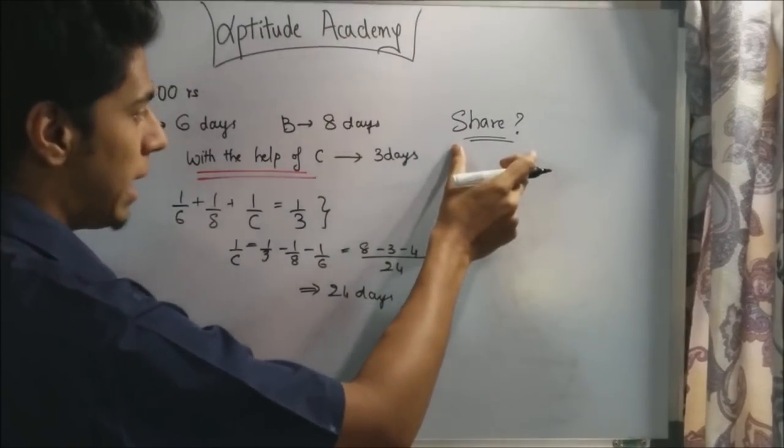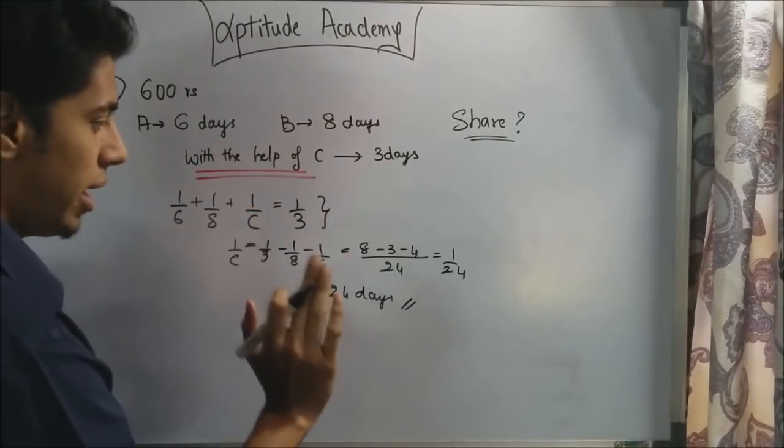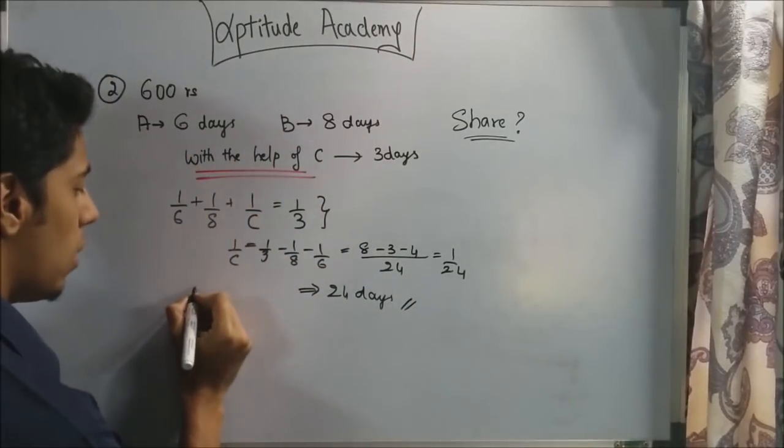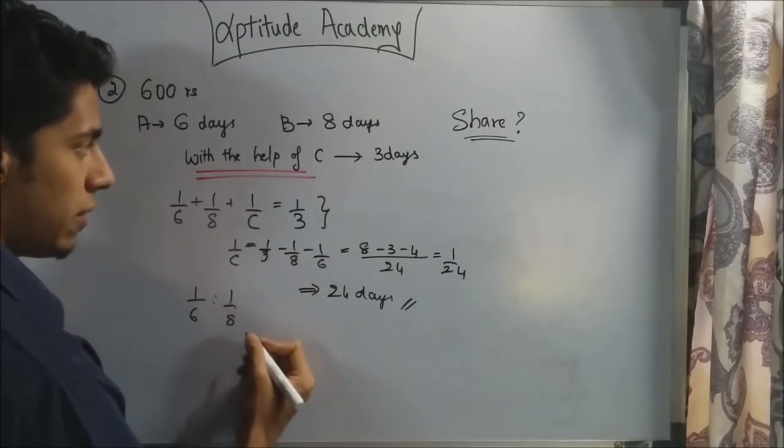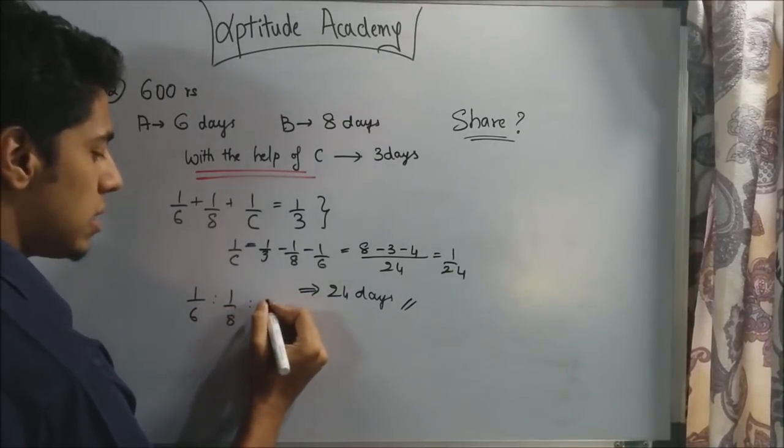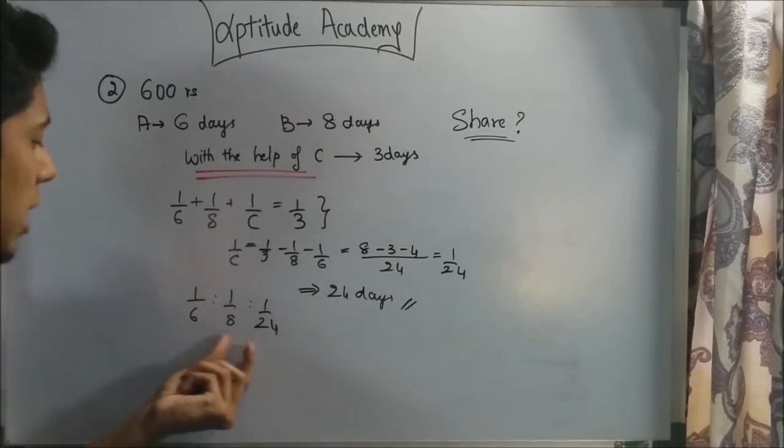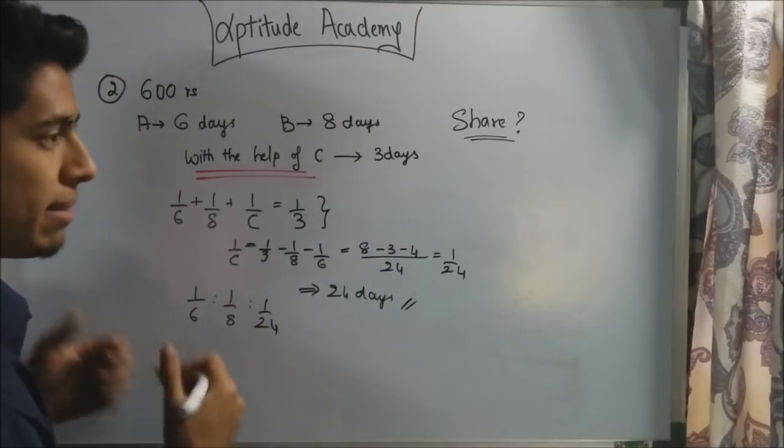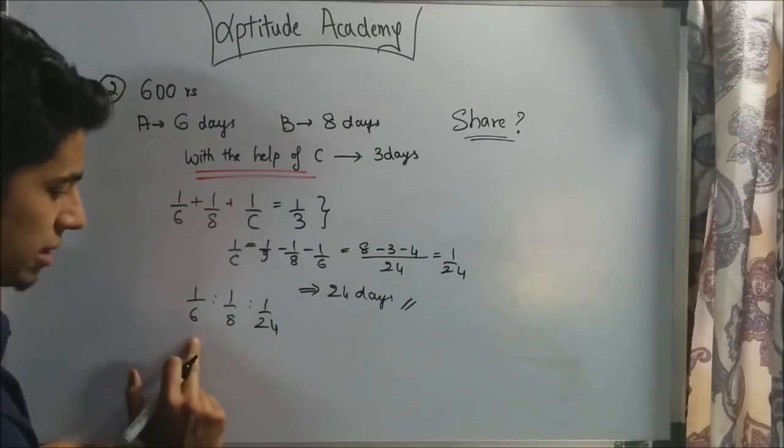They've asked you for the share of the money. We know 600 rupees is to be divided between A, B and C. A does 1 by 6th of the work every day. B does 1 by 8th of the work. And C does 1 by 24th of the work. However, it becomes very hard to distribute the money in these fractions. So what we do is make the whole numbers.